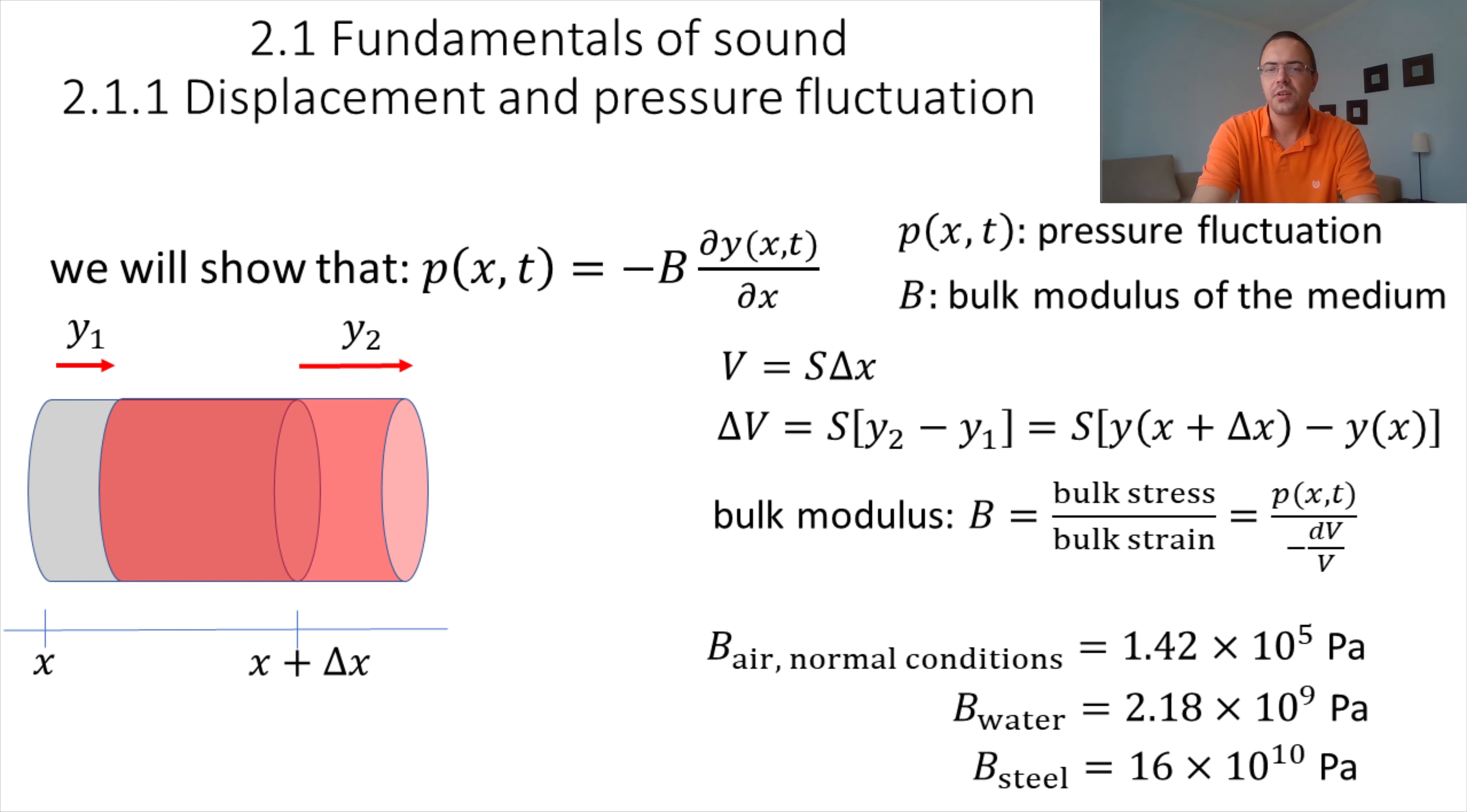So the bulk modulus is a quantity that varies a lot between different materials. For example, to change the volume of air, you will need a small pressure. So the bulk modulus is on the order of 10 to the 5 Pascal, which is relatively small. Water, for example, to change the volume of water, you need a larger pressure of the order of 10 to the power 9 Pascal. And for a solid material like steel, then you need even more pressure, so its bulk modulus is even larger.